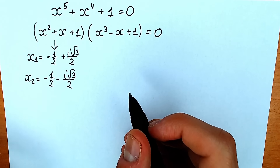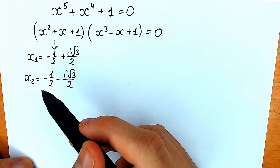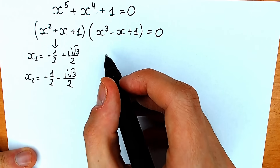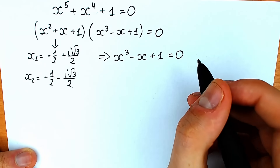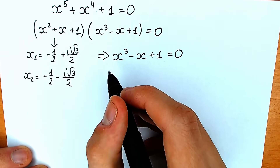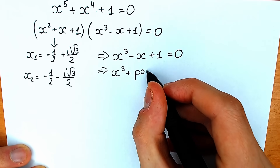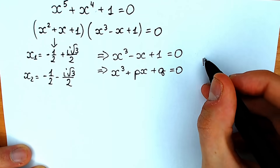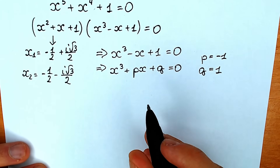Let's solve this cubic equation using Cardano's method. We rewrite it as x cubed minus x plus one equal to zero. The standard depressed cubic form is x cubed plus p times x plus q. Comparing, we get p equal to minus one and q equal to one.